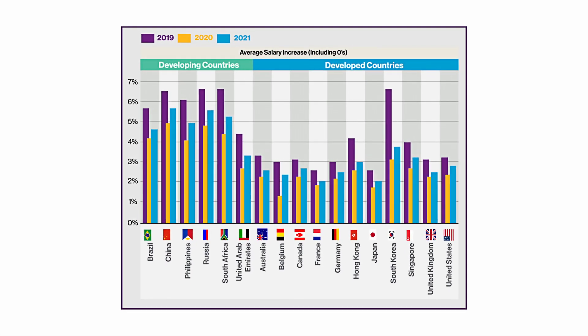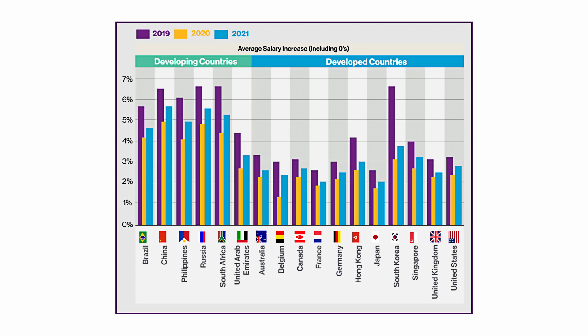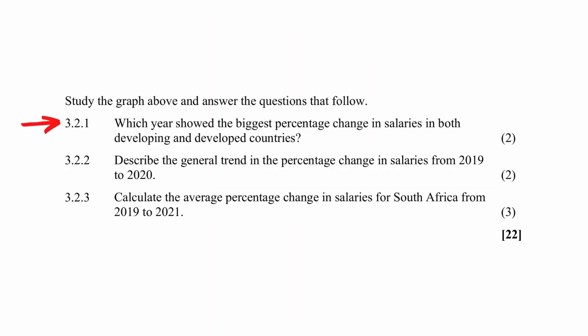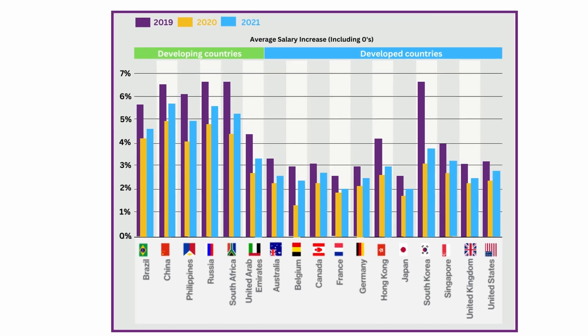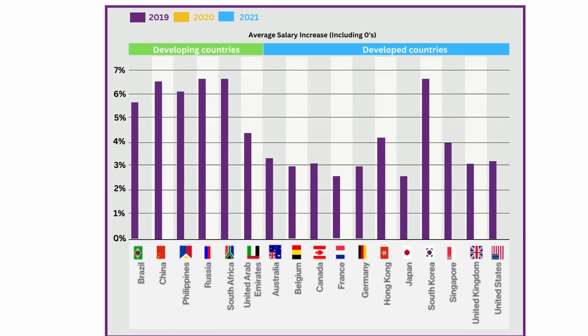You are given a compound bar graph that shows the percentage change in salaries between developing and developed countries from 2019 to 2021. In question 3.2.1, you are required to read off the graph the year that showed the biggest percentage change in salaries in both developing and developed countries. From the graph, the year with the biggest percentage change in both these types of countries was 2019.